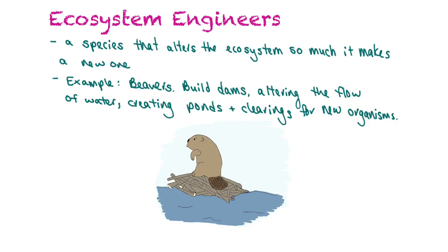Ecosystem engineers are species that alter the ecosystem so much that a new ecosystem is formed. An example would be beavers — they build their dams which alters the flow of water, and that creates ponds and clearings for new organisms. They are literally engineering new spaces for new ecosystems.